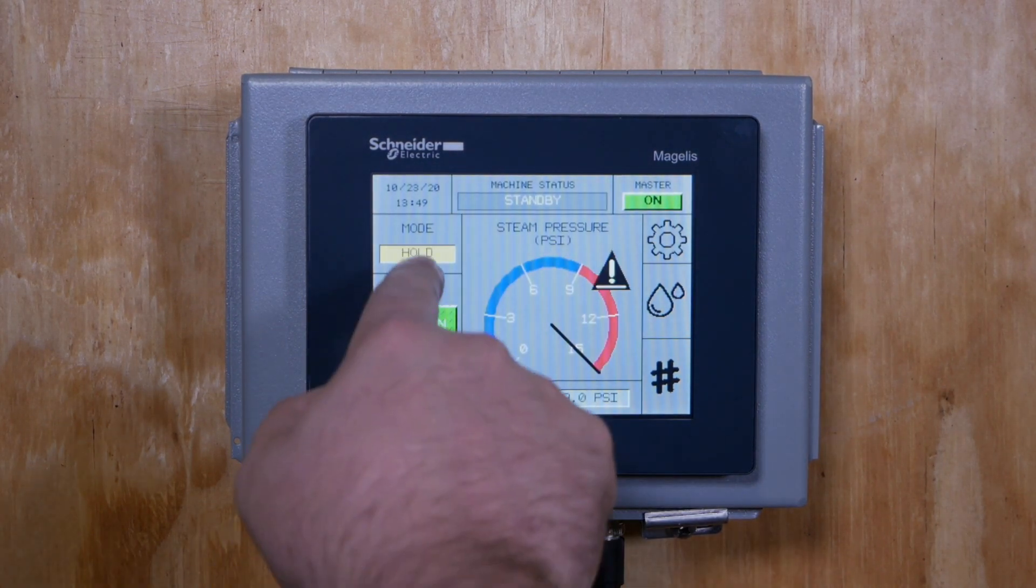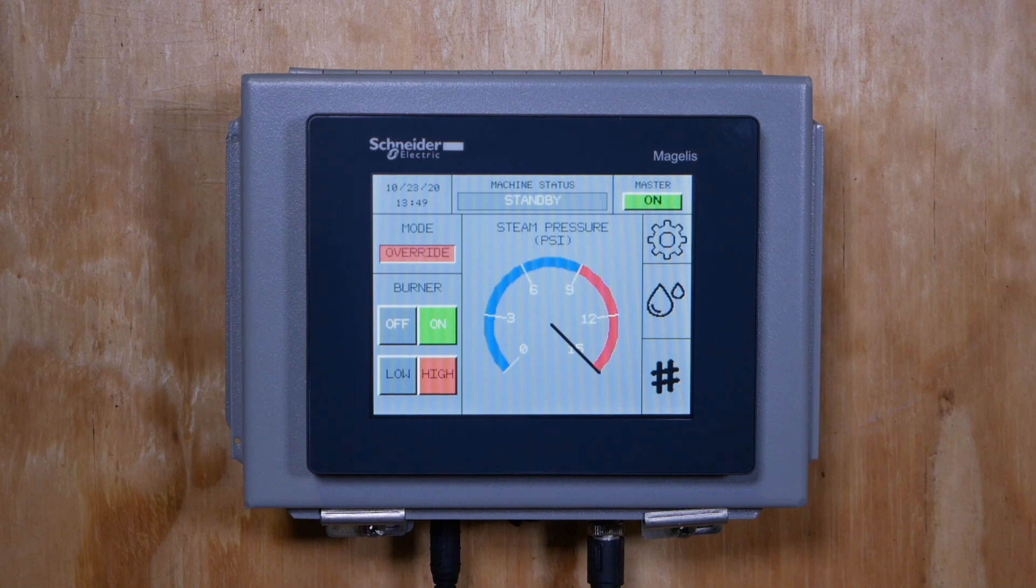Lastly is override mode. This mode is intended for diagnostic purposes only. There is no set pressure available on the touchscreen as it is only controlled by the mechanical limit chain.